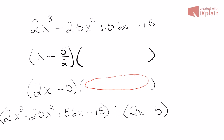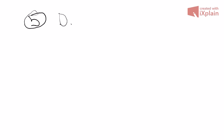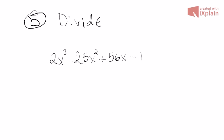To find the other factor, we take our original polynomial and divide it by 2x minus 5 — the factor we found from our rational zero. This gives us the remaining quadratic factor, from which we can find the other two irrational zeros. We'll do this using long division, which will also be useful later when we study rational functions.